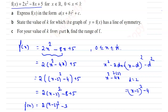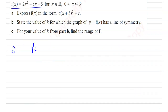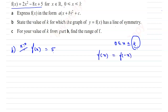The second question is to find the value of k for which y equal to f(x) has a line of symmetry. Taking x equal to 0, f(x) will be 5. Similarly, because the domain is 0 less than or equal to x less than or equal to k, if we substitute k we must also get 5 — that is called line of symmetry. For line of symmetry, f(x) equals f(minus x), or f(h plus x) equals f(h minus x).